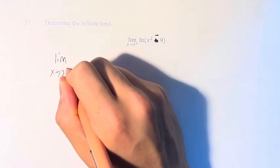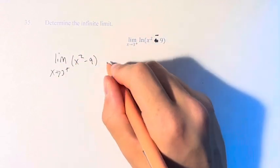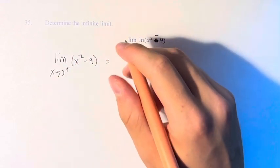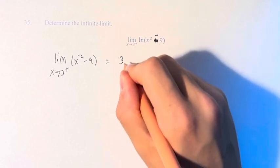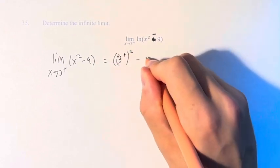So how do we do this? Well, let's just plug in our value into the function. So this is going to be equal to approaching 3 from the right squared minus 9.